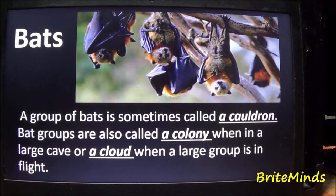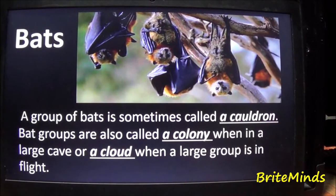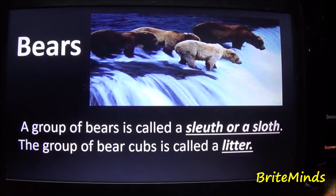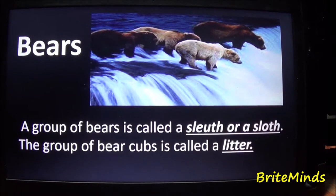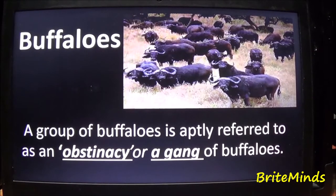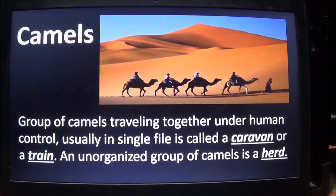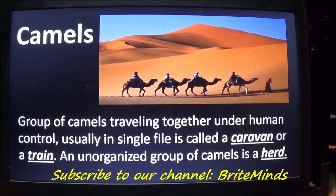Bats can also be called a cloud when a large group is in flight. Bears: a group of bears is called a sloth or a sleuth. A group of bear cubs is called a litter. Buffaloes: a group of buffaloes is referred to as an obstinacy or a gang of buffaloes. Camels: a group of camels traveling together under human control, usually in single file, is called a caravan or a train.